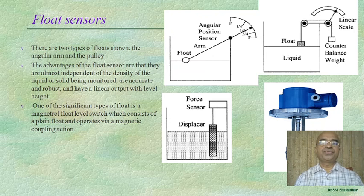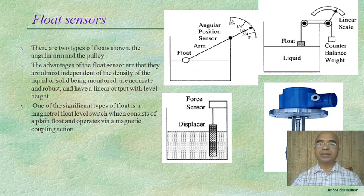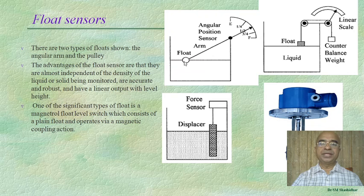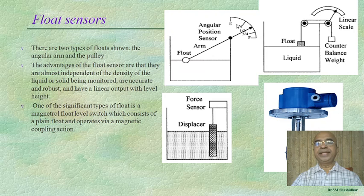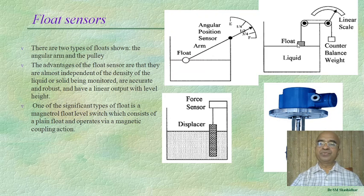The next method is float sensors. There are two types shown: the angular arm and the pulley. When the float moves up and down as the liquid level changes, an angular position sensor provides the indication of what is the level of the liquid in the tank.